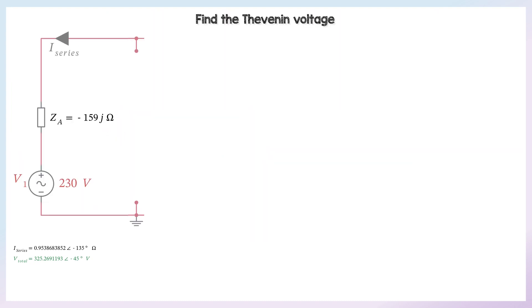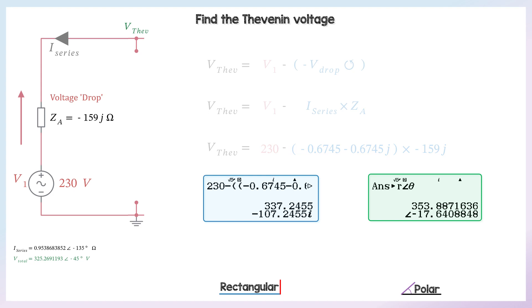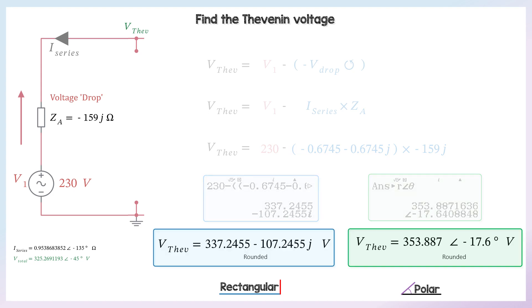So to find the Thevenin voltage, we've got an anti-clockwise current. So this voltage drop is actually going to make an addition that's going to be bigger than V1. So the Thevenin voltage is V1, take away the negative voltage drop across ZA. So that's V1 minus ZI, which is another voltage. So that comes out as 353, roughly, volts in polar form is the Thevenin equivalent voltage.